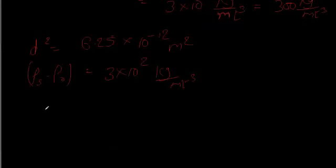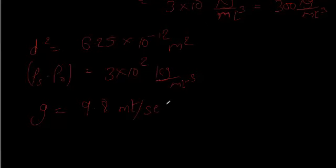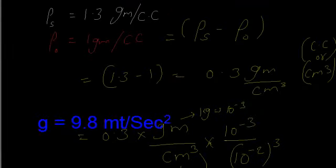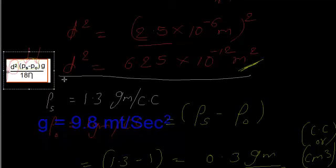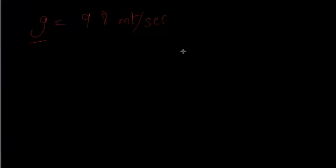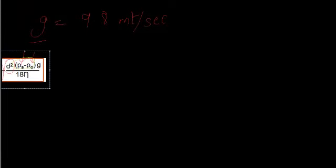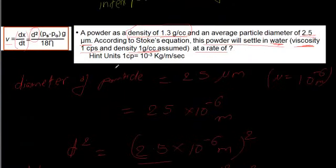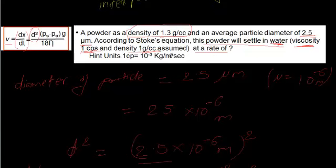Now we have d squared as 6.25 × 10⁻¹² m², the density difference as 3 × 10² kg/m³, and we need g and eta. The gravitational constant g is 9.8 meters per second squared. The viscosity eta is 1 centipoise, which equals 10 to the power of minus 3 kilograms per meter per second.